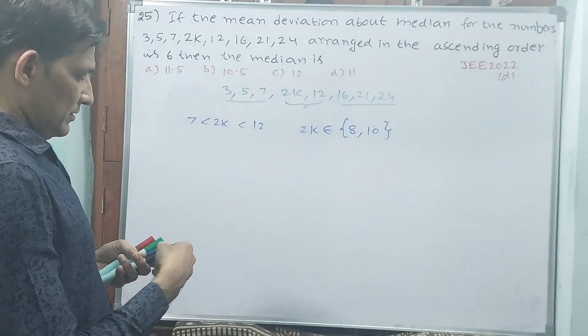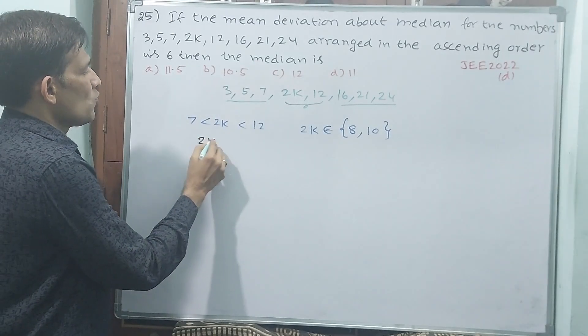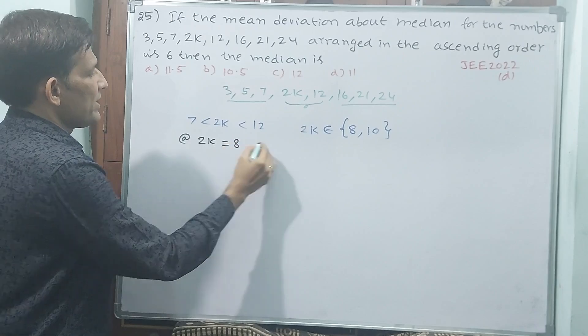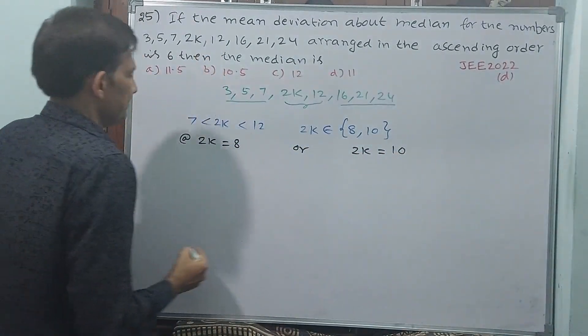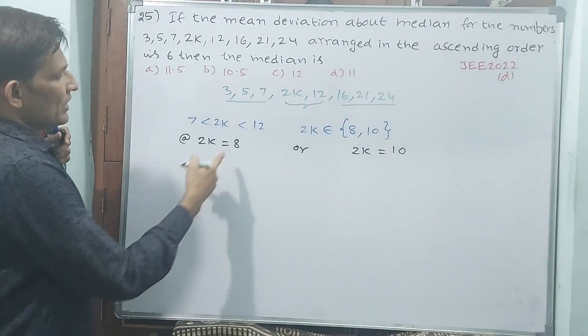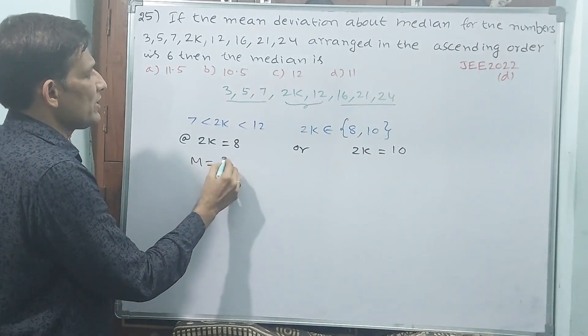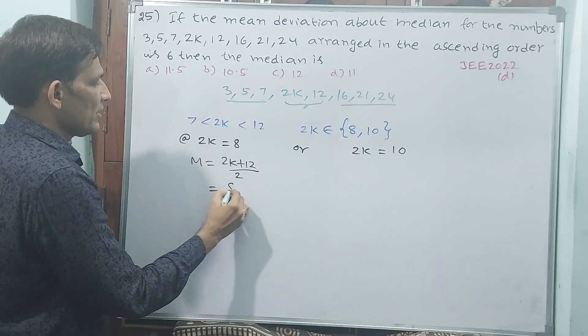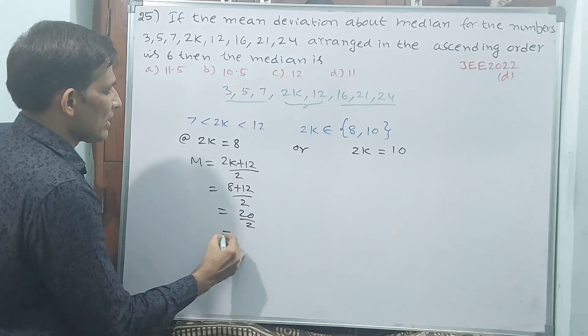If this is the condition, see, 2K is equal to 8 or 2K is equal to 10. If 2K is equal to 8, automatically your median will be 2K plus 12 by 2, or else 8 plus 12 by 2, or else 20 by 2, or else 10.